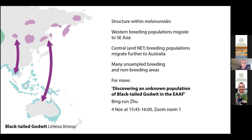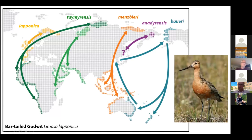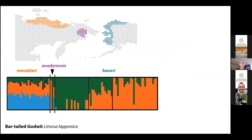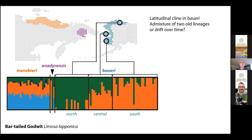Next species is the bar-tailed godwit. This is another bird with a large Palearctic distribution but actually quite a lot of diversity within this flyway. We see a similar pattern in which western populations are more homogeneous, but there's a lot of interesting stuff going on with the ones in our flyway. Within the boweri — the Alaska-breeding subspecies — we have a genetic cline relating to a latitudinal cline within the breeding area.